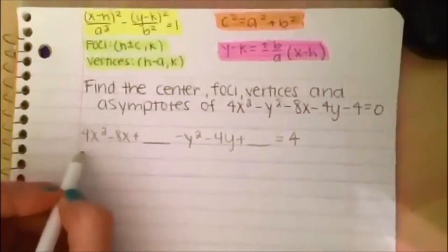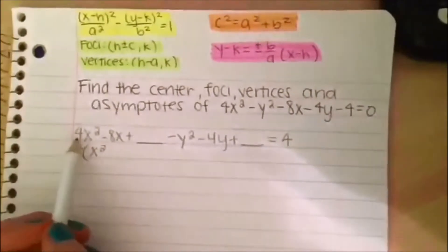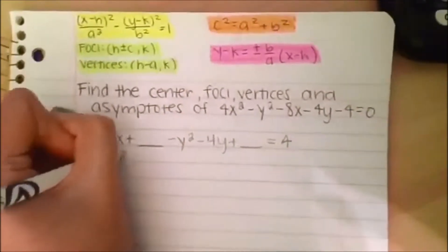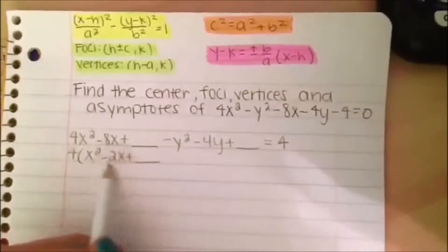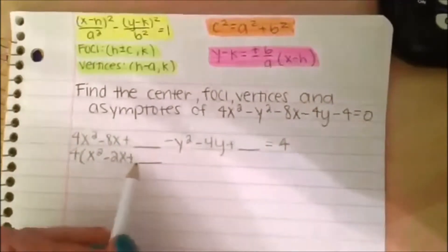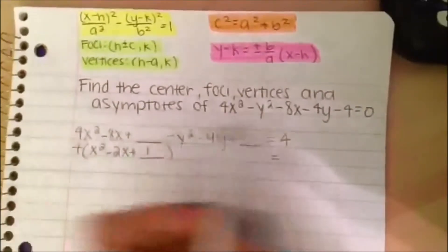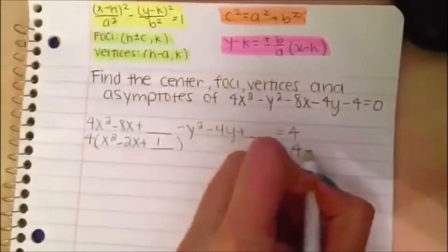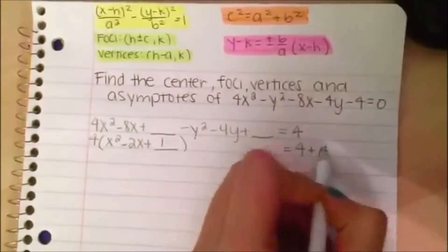We clean this up by factoring out the 4 in front: 4 times parenthesis x squared. Since we took the 4 out, we divide 8 by 4, giving us negative 2x plus blank. To find the completing number, we divide the coefficient of x by 2: negative 2 divided by 2 is negative 1, then square it to get 1. Since we're adding 1 inside, we also add 4 times 1 to the other side.